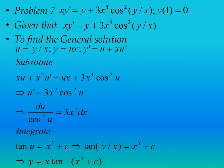The next problem is x·y' = y + 3x⁴·cos²(y/x), with initial value y(1) = 0. Let u = y/x, so y = ux. Differentiating: y' = u + x·u'. Substituting into the ODE: x·u + x²·u' = ux + 3x⁴·cos²u. Simplifying: u' = 3x²·cos²u. Separating variables: du/cos²u = 3x²·dx. Integrating: tan(u) = x³ + c. Substituting back u = y/x: tan(y/x) = x³ + c, so y = x·tan⁻¹(x³ + c). This is the general solution.